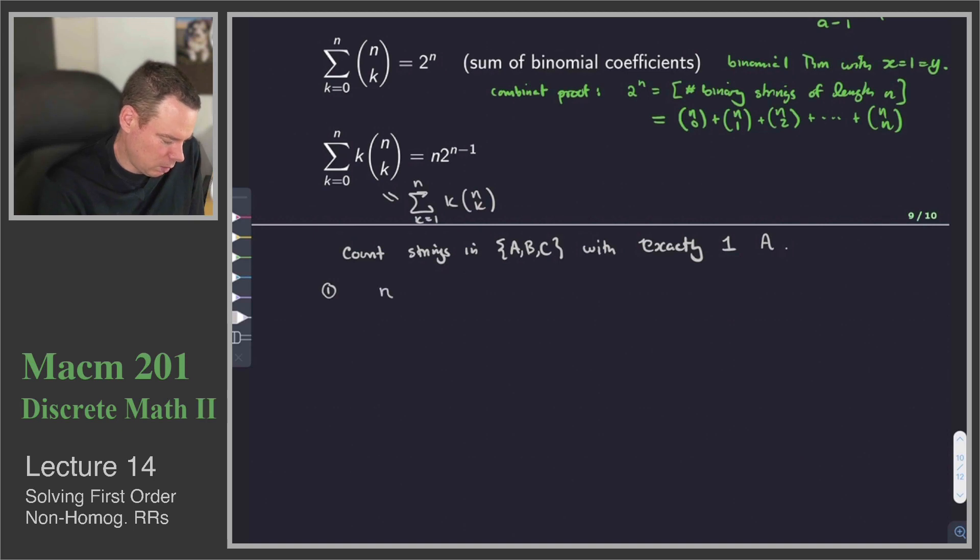And I'm going to count it in two different ways. And one way I'll get the left-hand side of this equality, the other way I'll get the right-hand side. So here's our first way to count them. So we're going to choose where that a is going to be. There's n spots, so strings of length n. Sorry, the vital part here. Strings of length n, that's what we're counting, with exactly 1 a. So choose where you want the a to go. So choose position of a. Once you've chosen the position of a, then the remaining n minus 1 spots can be filled with either b or c. So for each of those n minus 1 spots, you have two choices.